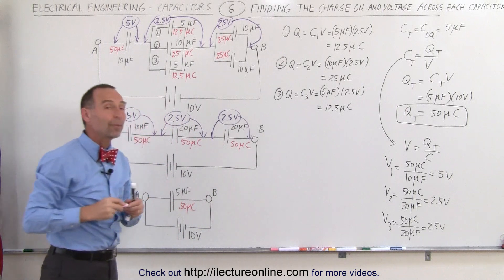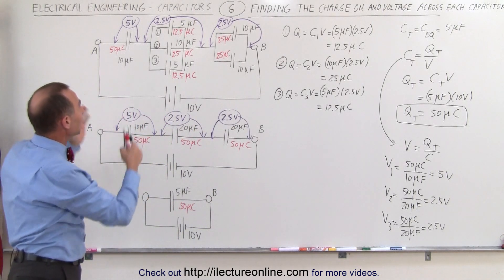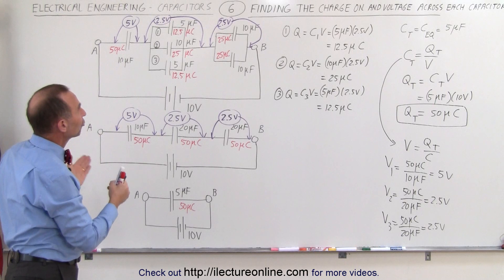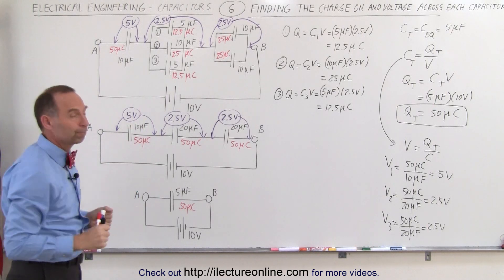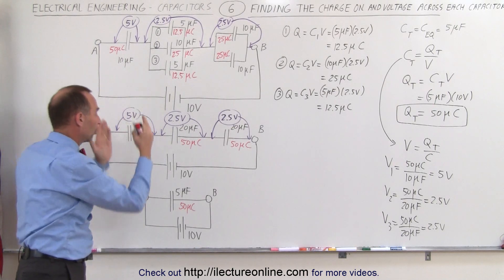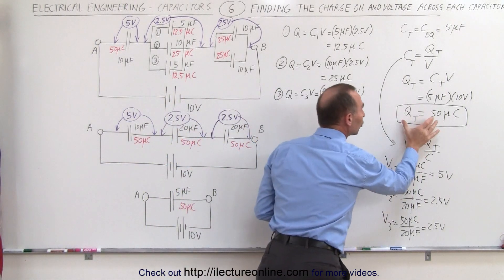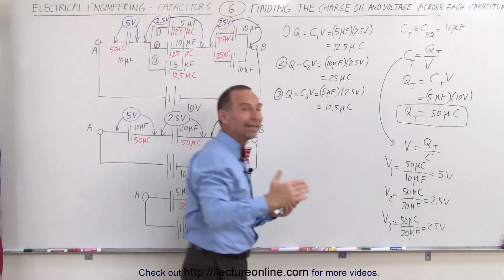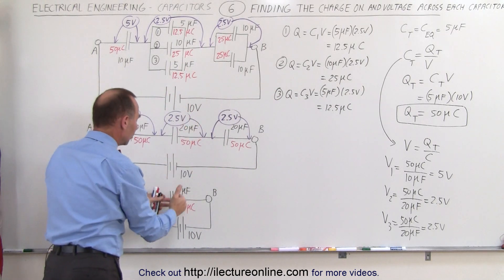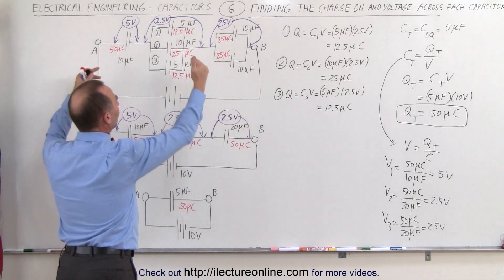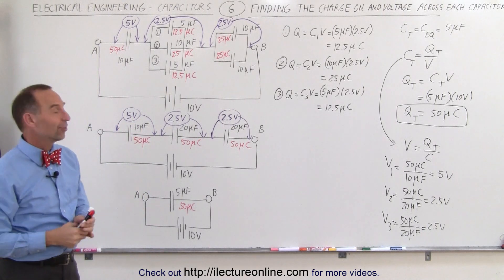This is a nice example showing how to find the charge and voltage for each capacitor in a circuit. Remember: first always find the equivalent capacitance, then find the total charge, and then work backwards through the diagrams to attribute charges to each capacitor one step at a time. And that's how it's done.